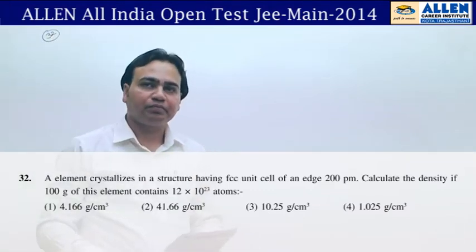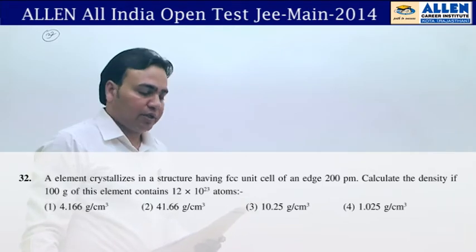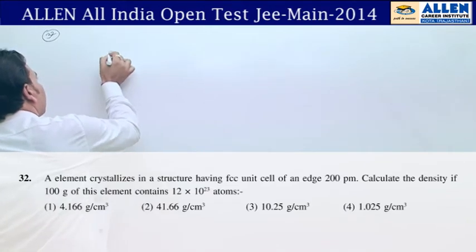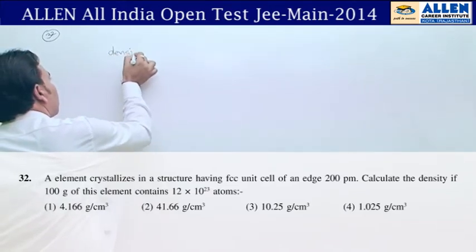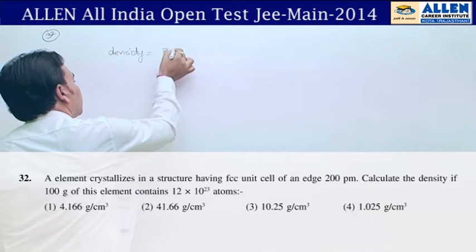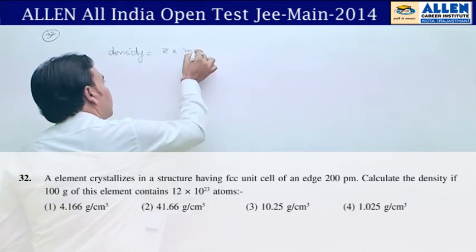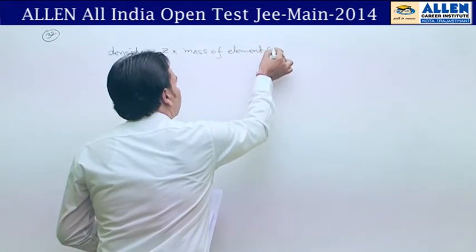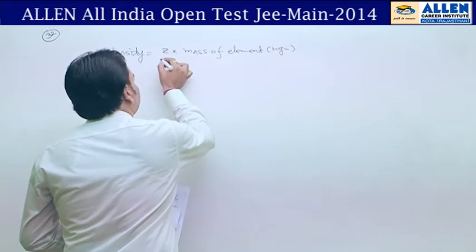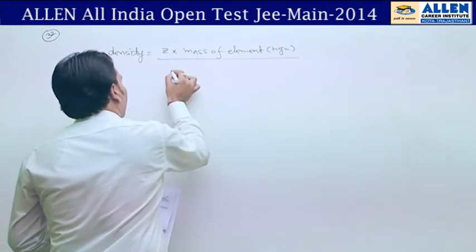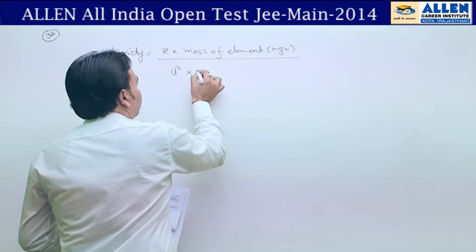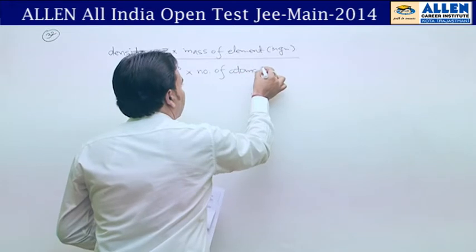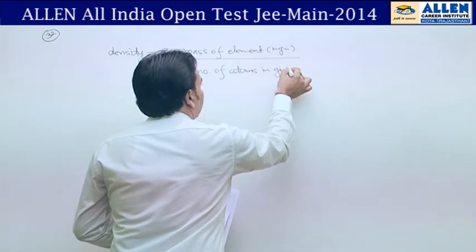In question 32, calculate the density. We can solve this using the formula: density equals Z times mass of element in grams, upon A³ times number of atoms in the given mass.